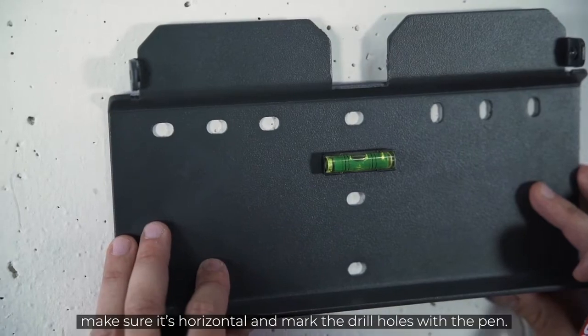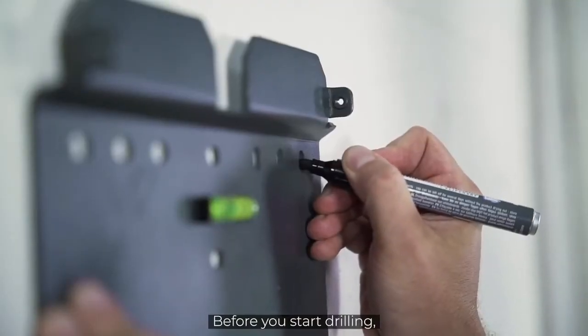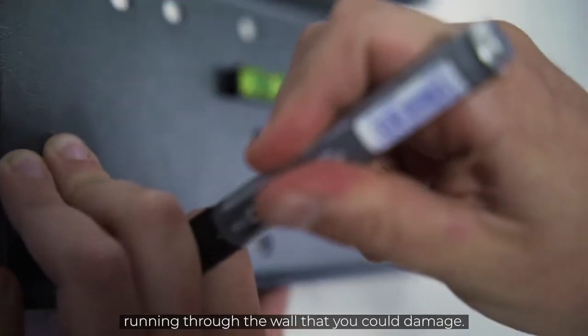Just hold it against the wall, make sure it's horizontal and mark the drill holes with the pen. Before you start drilling, you should make sure that there are no wires running through the wall that you could damage.